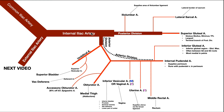The external iliac artery continues down toward the inguinal ligament, and when it passes under the inguinal ligament and winds up in the thigh region, it changes names to the femoral artery — we cover that in a separate video. Now the internal iliac artery goes within the pelvis, and the vast majority of its vessels remain in the pelvic cavity. There are a couple of exceptions: the obturator artery and the accessory obturator artery, which escape the pelvic region and wind up in the thigh.